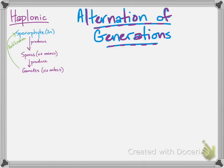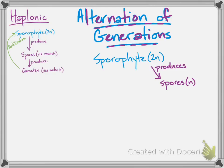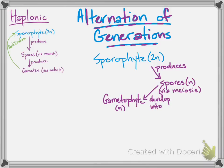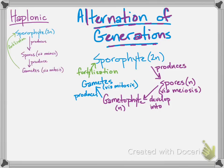Alternation of generations does just that — it alternates between a diploid adult, which is the sporophyte, which uses meiosis to produce spores, and a haploid adult, called a gametophyte, which uses mitosis to produce gametes. Those gametes fuse to make another diploid sporophyte, and the process continues. Ferns are an example of an organism that uses this process.